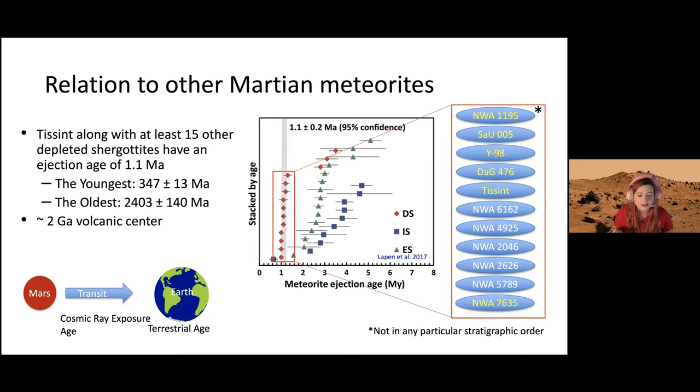There are around 15 of these shergotites associated with this ejection. They're all olivine-furic, related by mineralogies and ejection age. Some are dated, some not. The oldest dated one, NWA 7635, is 2.4 billion years, and the youngest is about 347 million years. We take this to mean this represents a volcanic center with continuous eruptions piling on top of each other.